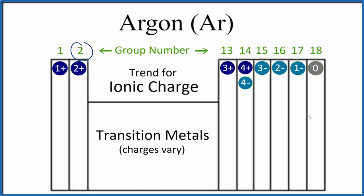Now argon, that's about right here on the periodic table in group 18. That means it has an ionic charge of 0.